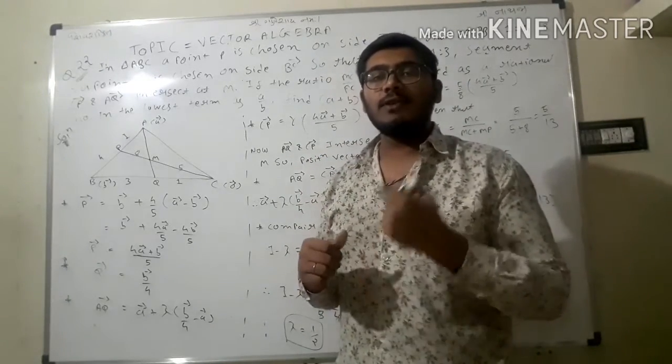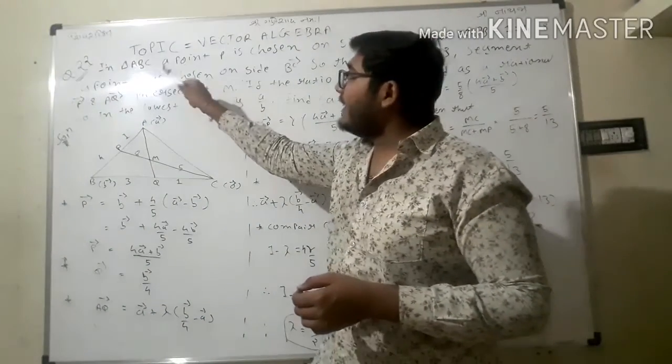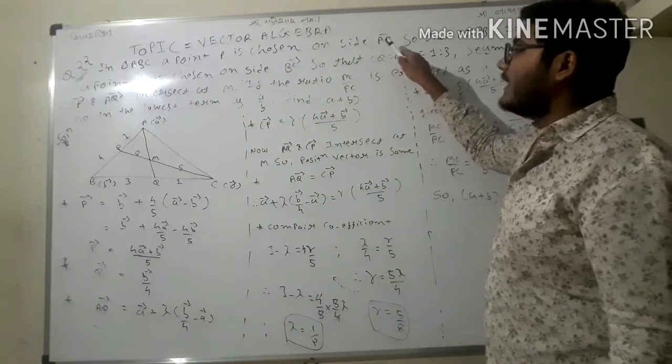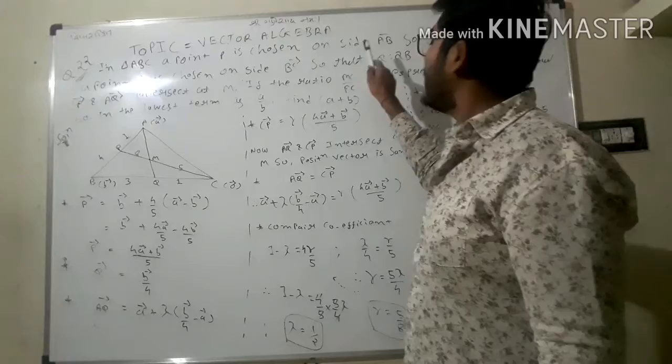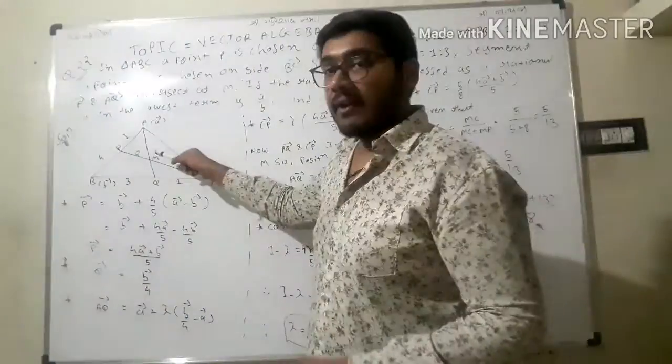In triangle ABC, a point P is chosen on side AB. With this question I will explain a diagram.